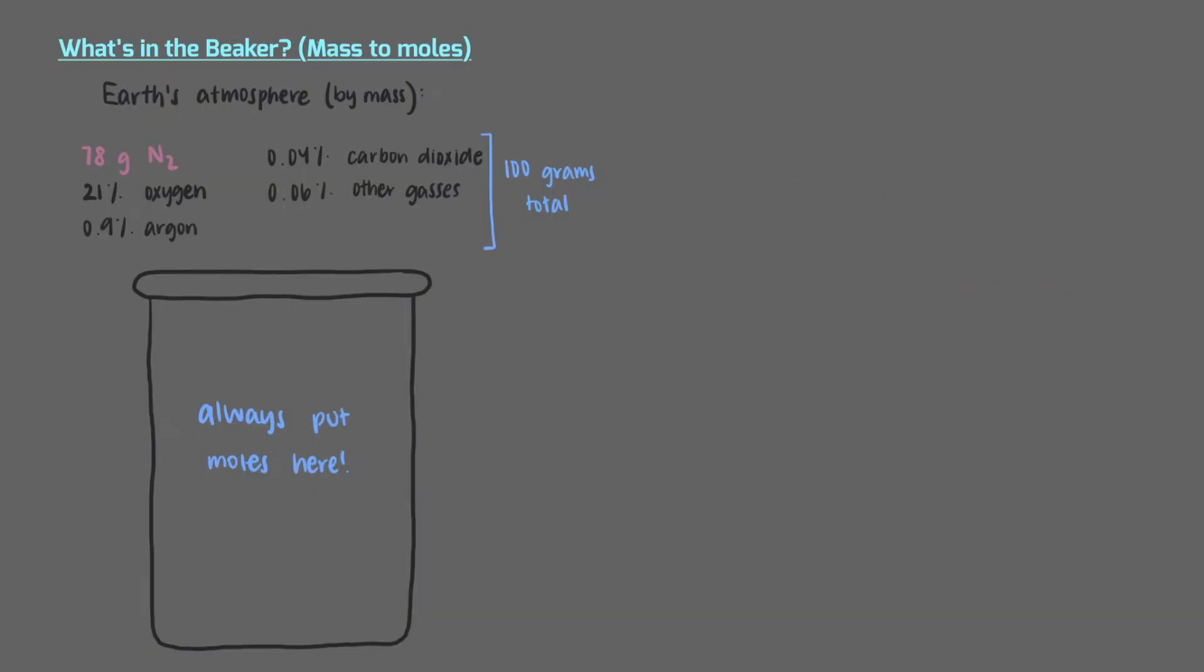We'll take this problem step by step. Start with 78 grams of nitrogen. There are 28.01 grams in one mole of nitrogen, so we'll set up the conversion that allows us to cancel out the grams and leaves us with moles of nitrogen. Once we multiply everything out, we get that there are 2.78 moles of nitrogen in this sample of air. Now we can update our beaker to show how many moles of nitrogen we have in our sample of air.